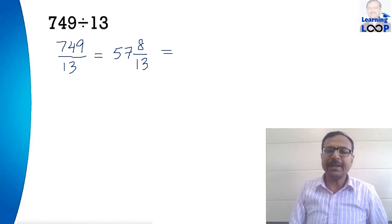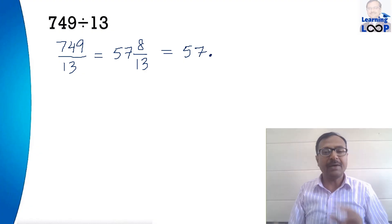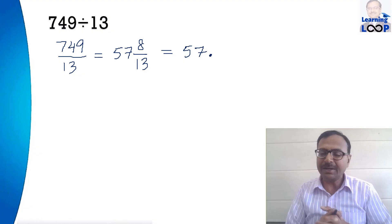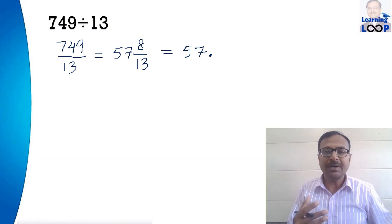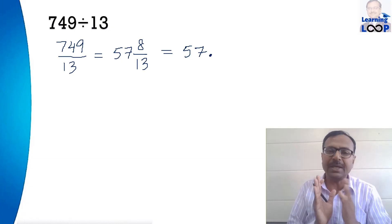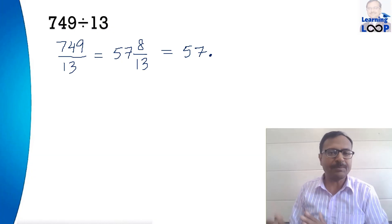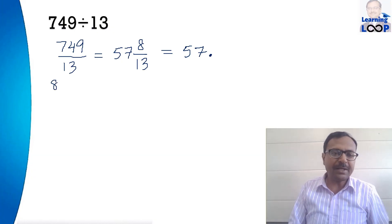Now I know that my answer is going to start with 57 and after decimal I want to find that part. The intention of this video is to tell you what will be the decimal part of the answer. So 57 point something. Now if you see 8 upon 13, the numerator here is 8.